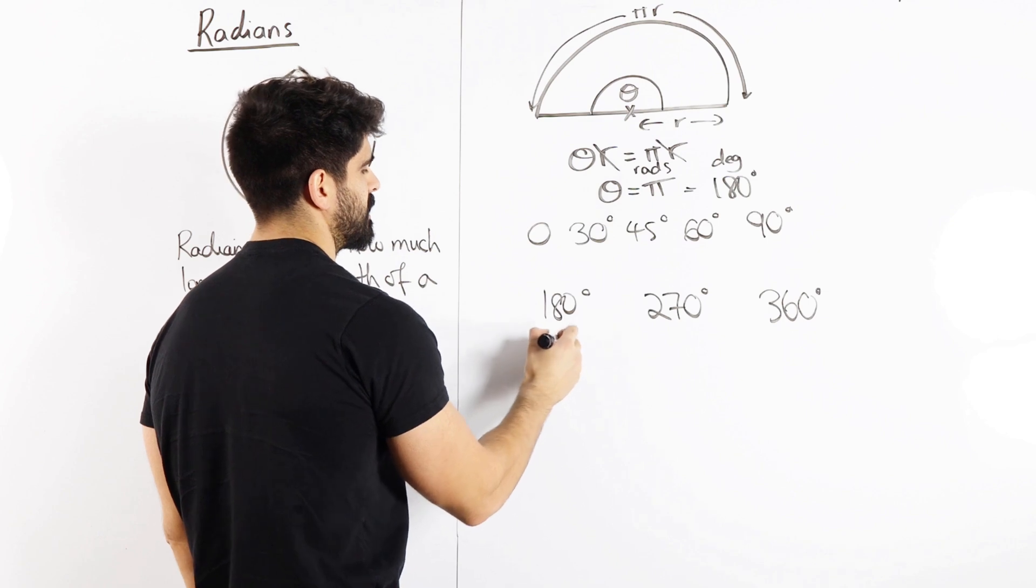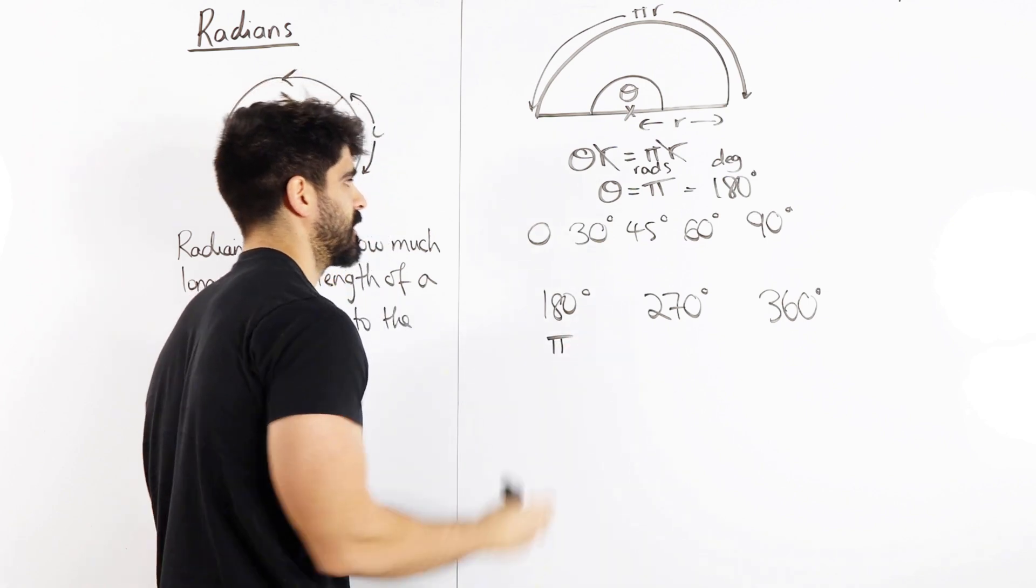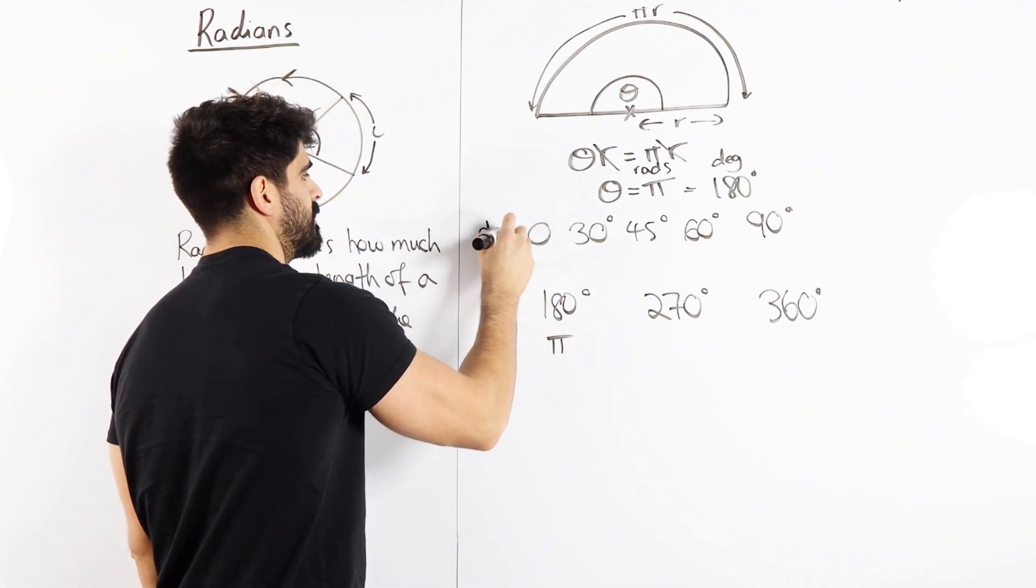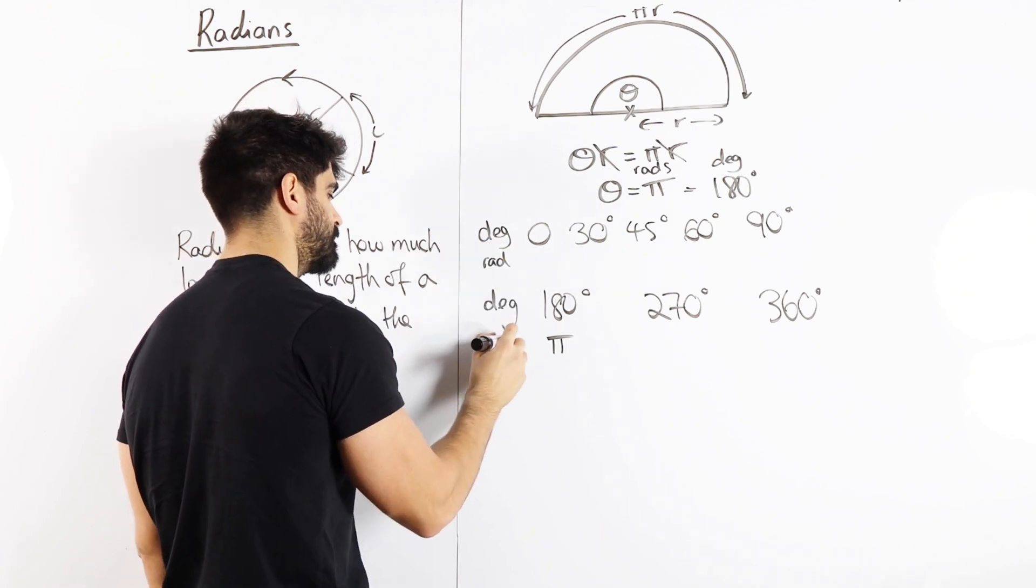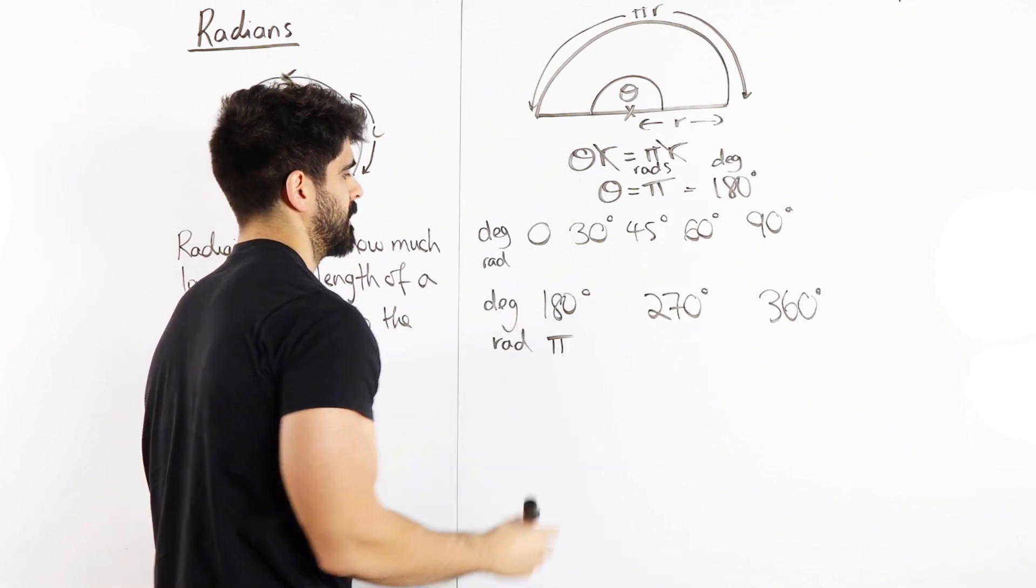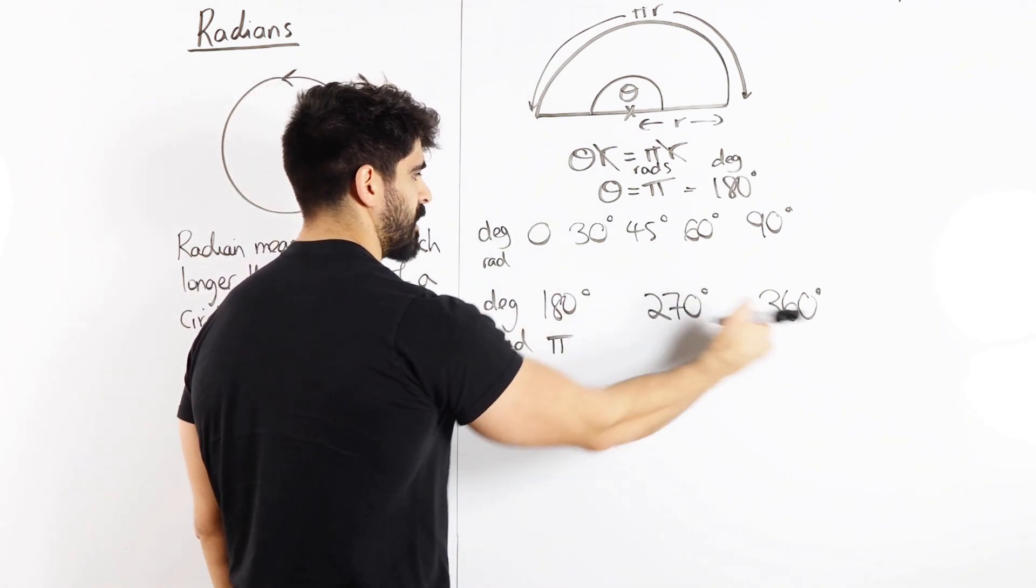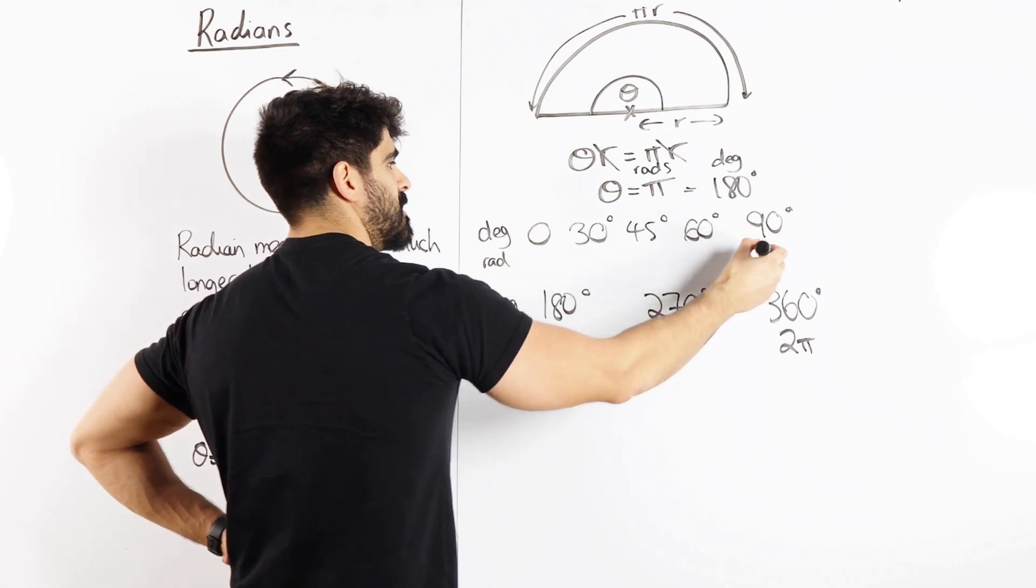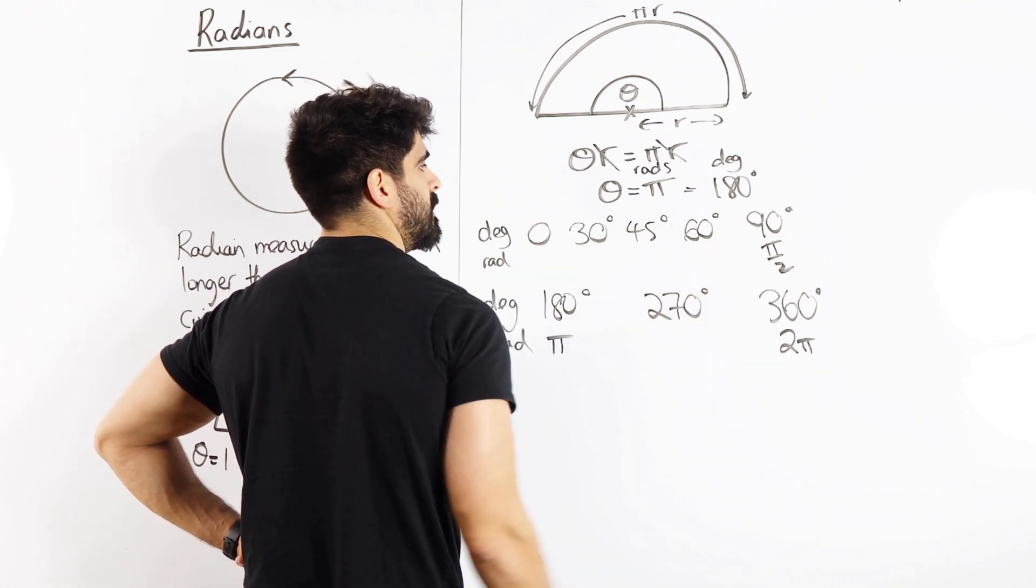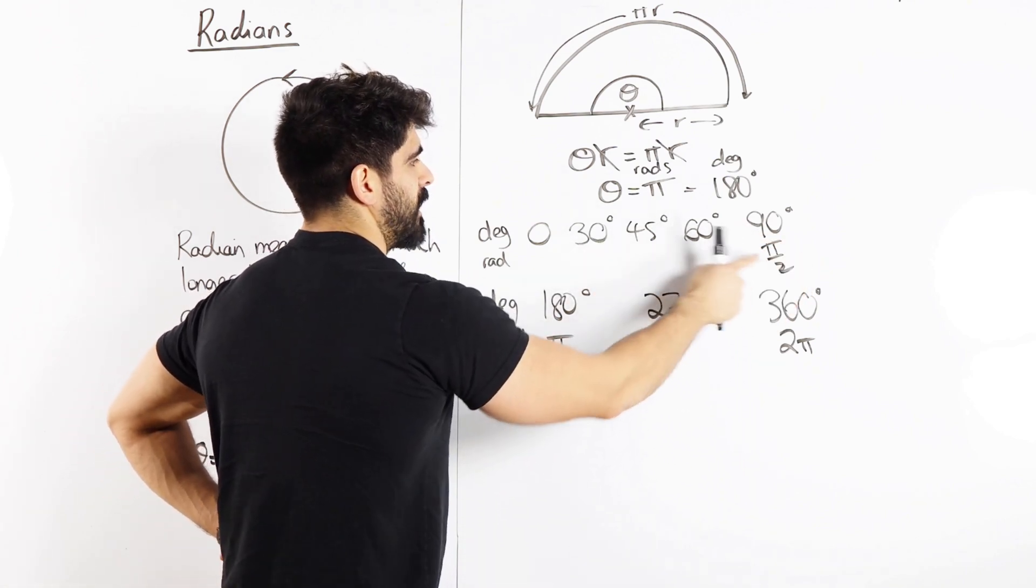So if we know 180 is pi radians, this is my degrees, and this is my radians. So if 180 is pi, then when I double that, 360 is 2 pi. If I half that, 90 is pi over 2. Half of 90, 45, when you half a half, is a quarter, so pi over 4.